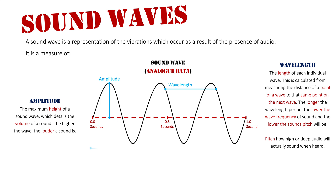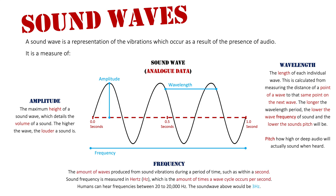The final factor is frequency. Frequency is the amount of waves produced from sound vibrations during a period of time, such as within a second. Sound frequency is measured in hertz, which is the number of times a wave cycle occurs per second. On the screen you can see a wave cycle occurring three times, which means this would be three hertz. Humans can only hear frequencies between 20 and 20,000 hertz — so you wouldn't hear less than 20 hertz even if I played it right now.